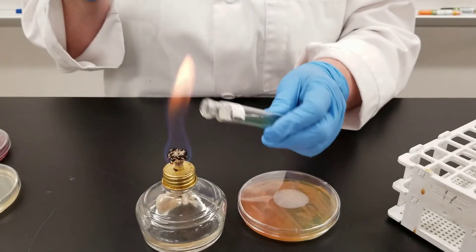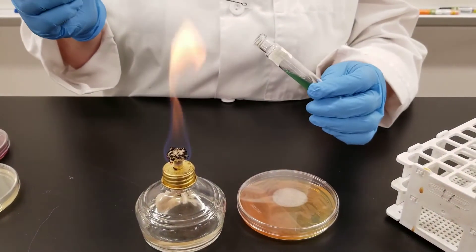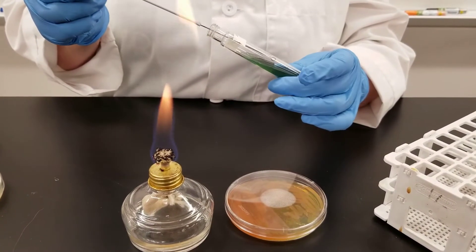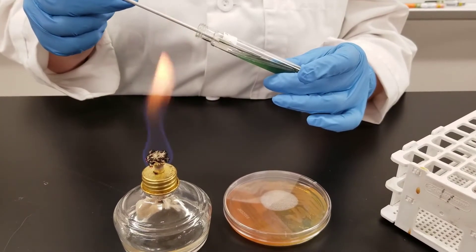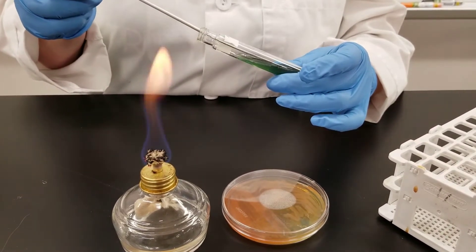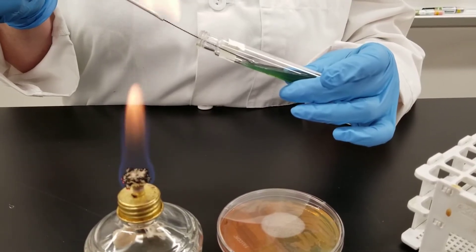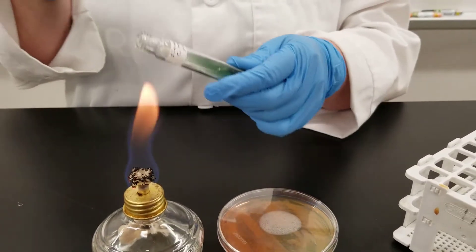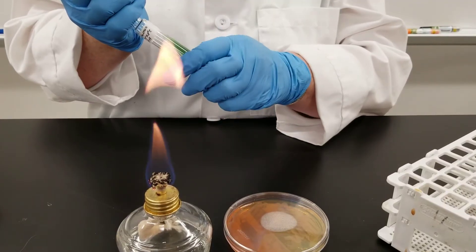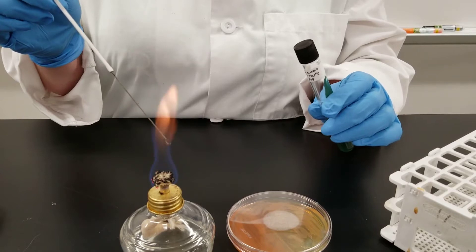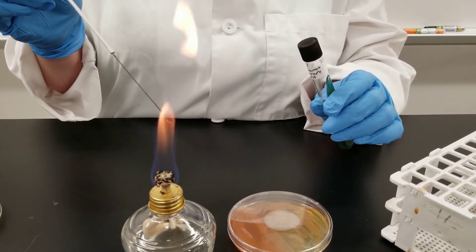We're going to flame the lip of the test tube to sterilize anything in there, bring our loop down to the bottom and then just streak up. The idea is that our inoculum, our bacteria, is going to inoculate along that slant of the tube. Flame the lip of the tube again before closing it and once again flame your loop.